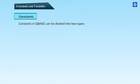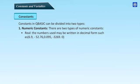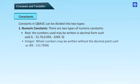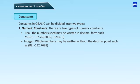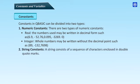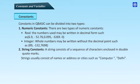Constants and variables: Constants in QBasic can be divided into two types: numeric constants and string constants. Numeric constants: There are two types of numeric constants, real and integer. The number used may be written in decimal form such as 6.9, -52.76, 0.095, -3269.0, whereas in an integer, whole numbers may be written without the decimal point such as 89, -132, 7698. String constants: A string consists of a sequence of characters enclosed in double quote marks. Strings usually consist of names or addresses or cities such as "computer", "delhi".